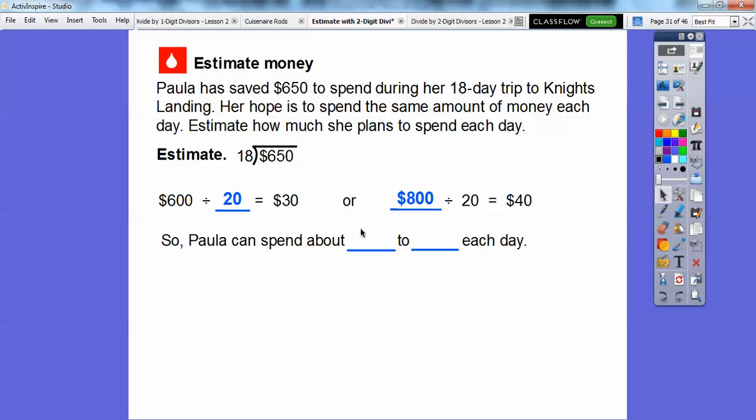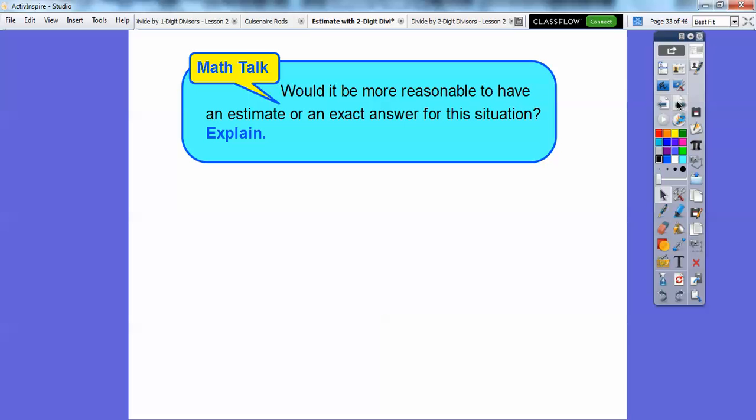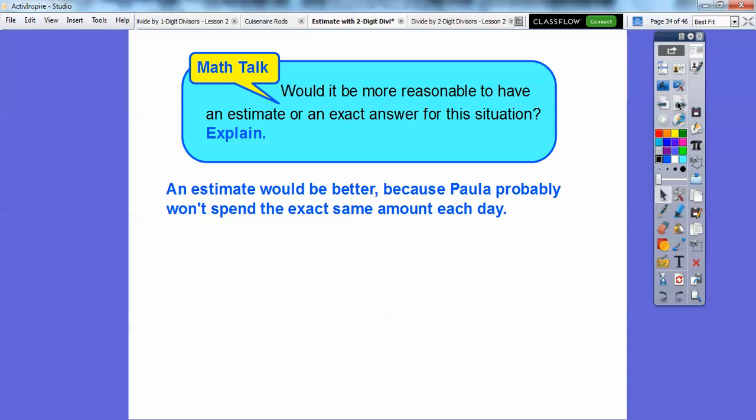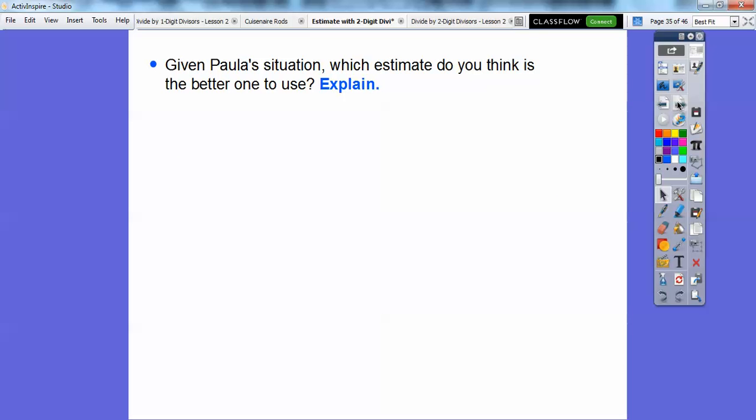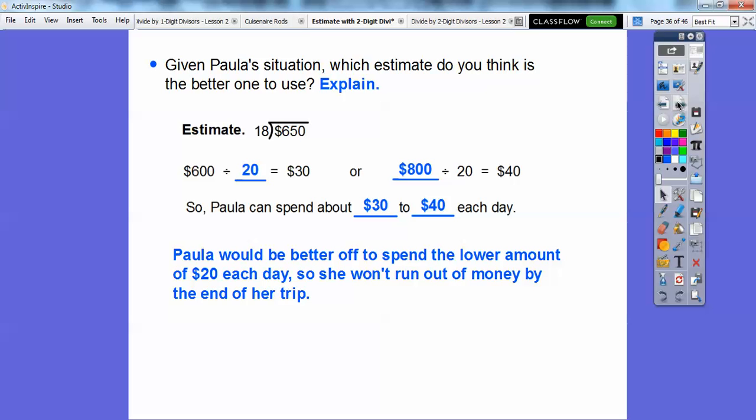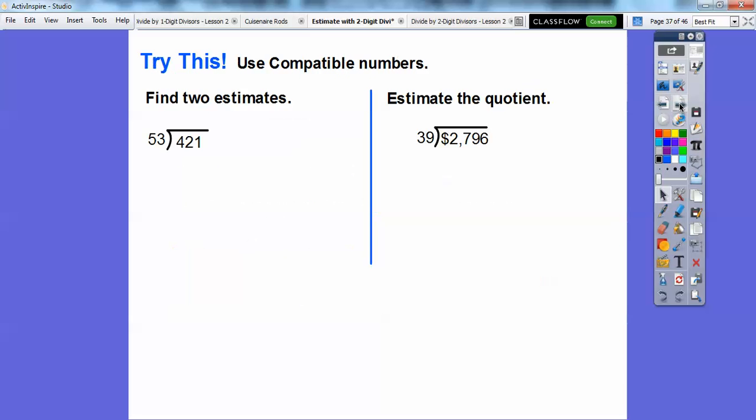So Paula can spend about, how much can she spend each day? Well, about $30 a day or $40 a day because we rounded 600 and 800 and we divided both of those by 20. So about $30 to $40 a day. So would it be more reasonable to have an estimate or an exact answer for this situation and explain? Well, an estimate would be better because Paula won't spend the exact same amount each day. Someday it'll be a little bit more. Someday a little bit less. So given Paula's situation, which estimate do you think would be a better one to use? So would it be better for her to spend $20 a day or $30 a day? Well, I would think she would be better off to spend the lower amount of $20 a day. So she won't have a chance of running out of money by the end of her trip right there.